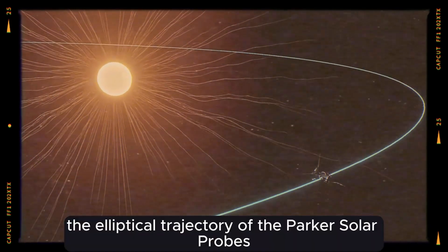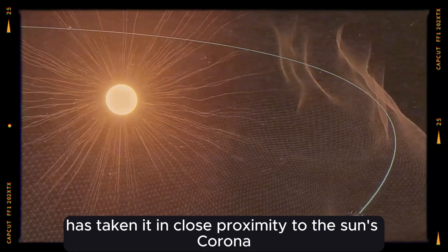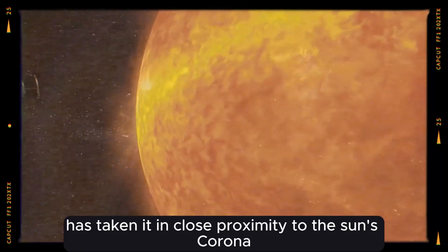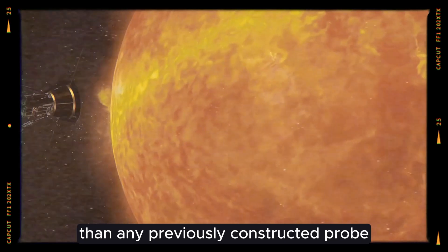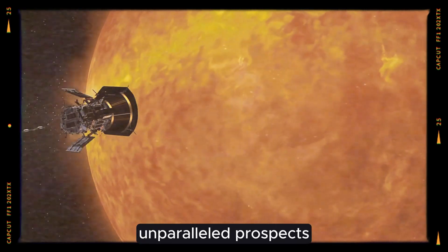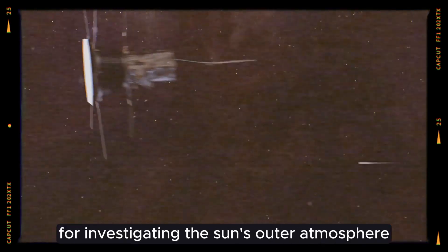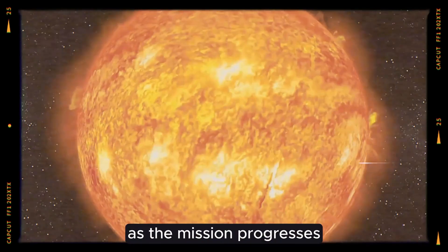The elliptical trajectory of the Parker Solar Probe has taken it in closer proximity to the Sun's corona than any previously constructed probe, hence offering unparalleled prospects for investigating the Sun's outer atmosphere.